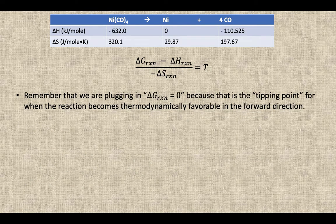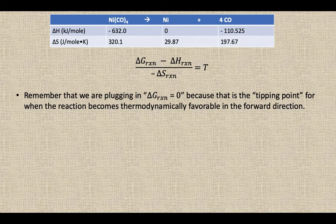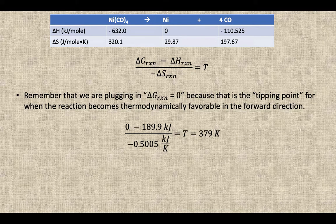If we plug in a delta G value of zero as our tipping point, because positive delta G is thermodynamically favorable in the reverse direction towards the reactants, negative delta G is thermodynamically favorable for the product. So if delta G is zero, we're right at that tipping point for where it flips from becoming thermodynamically favorable in the reverse to thermodynamically favorable in the forward direction. So if we plug in that zero for G, we know our H and our S from the previous reaction we could solve for T.